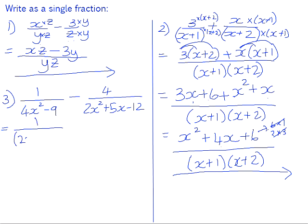So 4x squared minus 9 is the difference of 2 squares. It will factor into (2x+3)(2x-3).